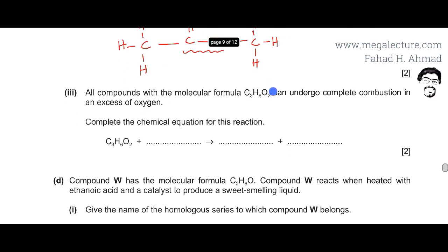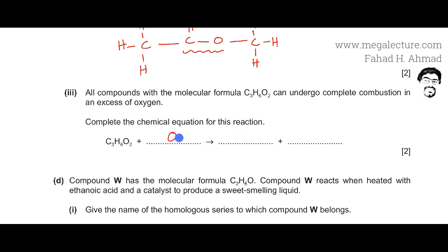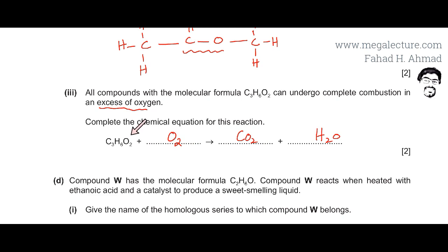Moving to the next part, all compounds with the molecular formula C3H6O2 can undergo complete combustion in an excess of oxygen. When an organic compound combusts with excess oxygen, complete combustion occurs, producing carbon dioxide and water molecules — these are always produced when an organic compound combusts.